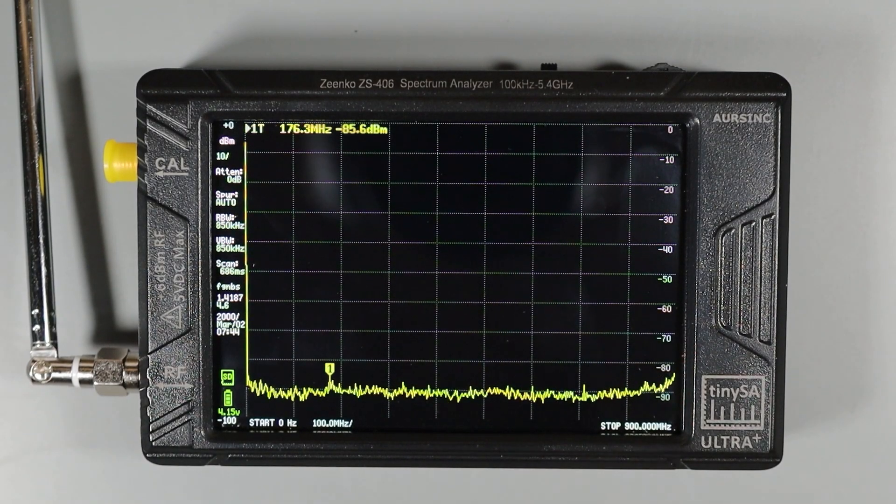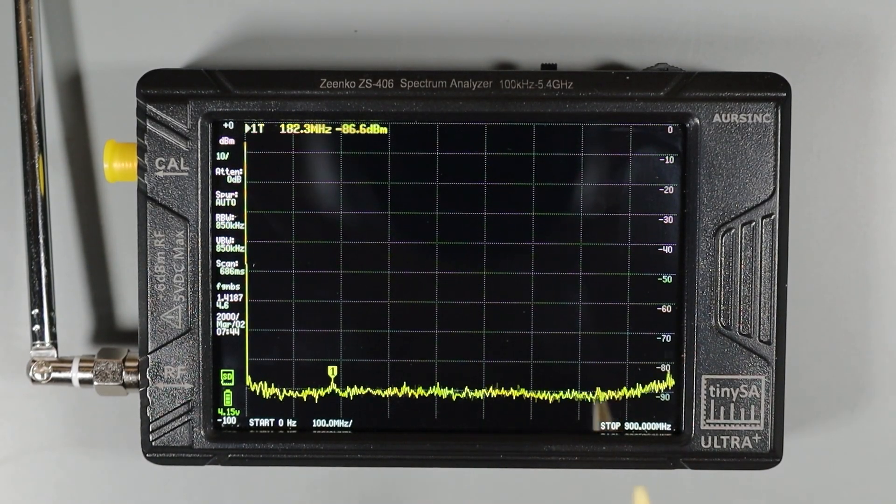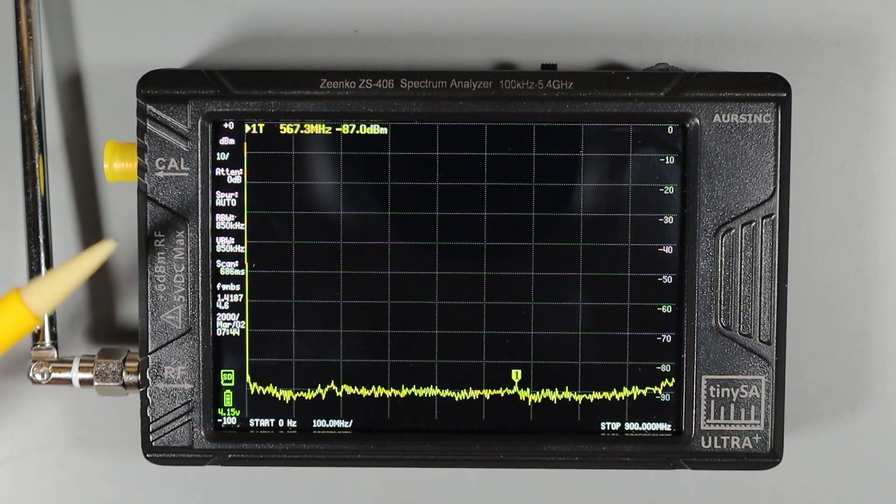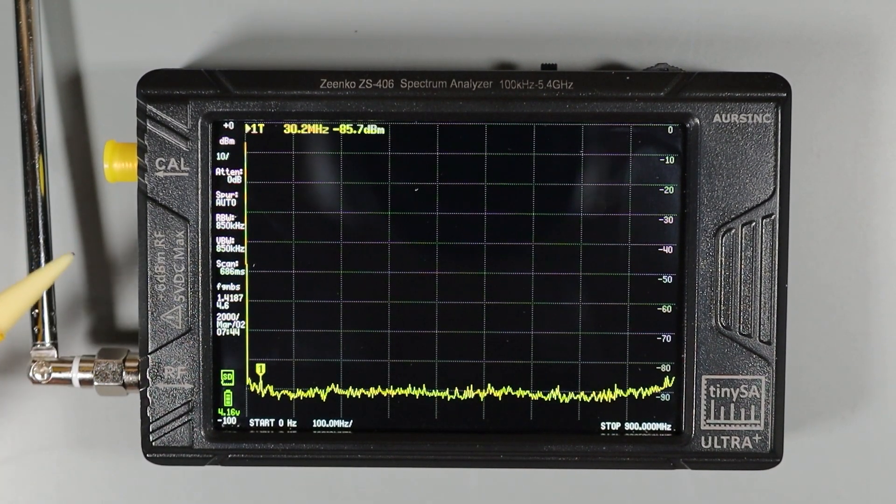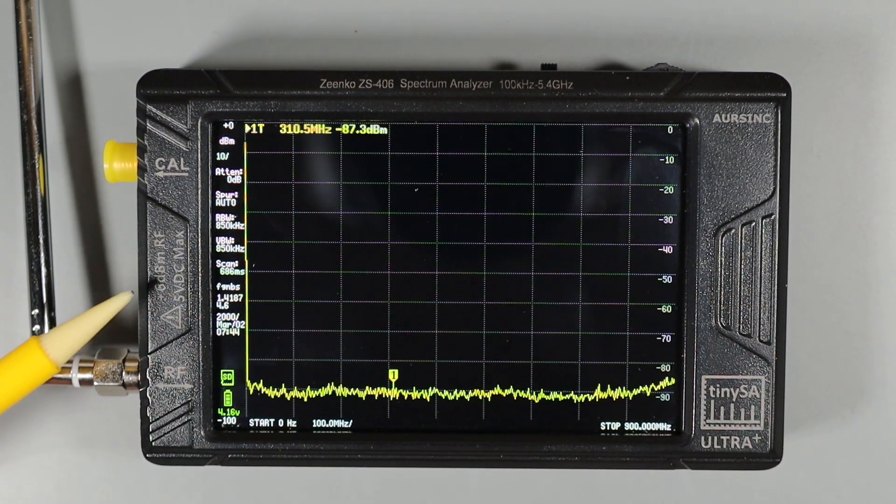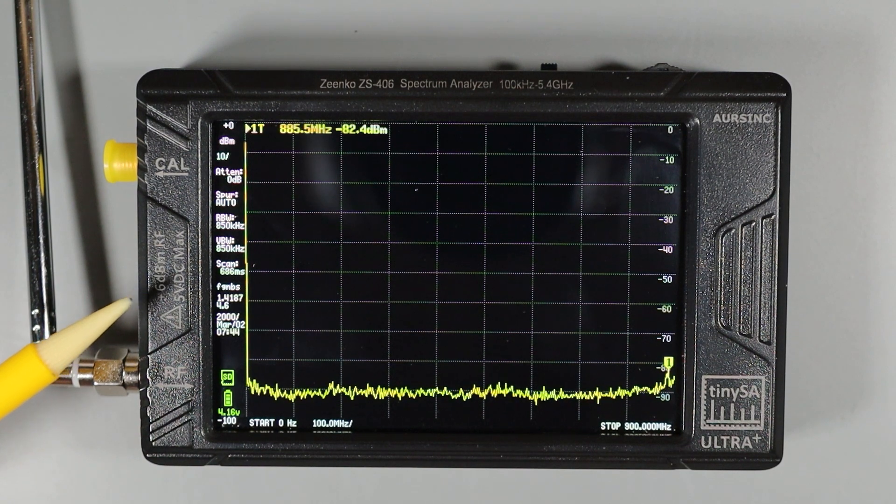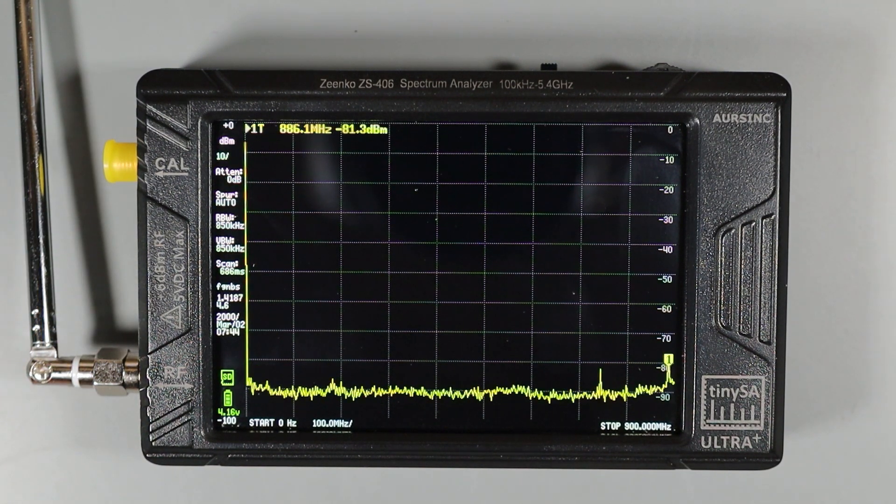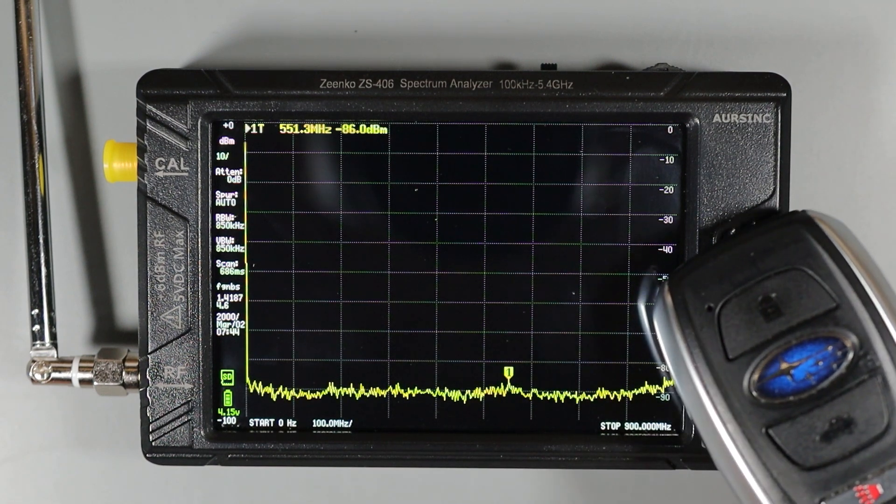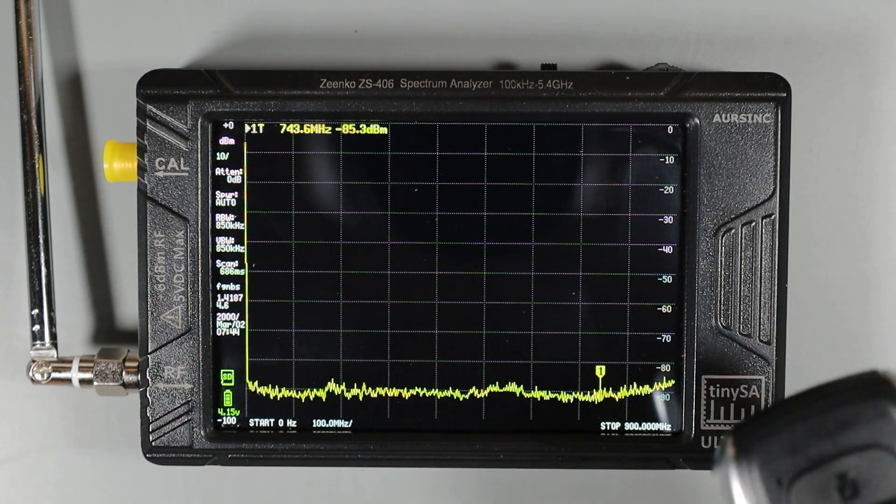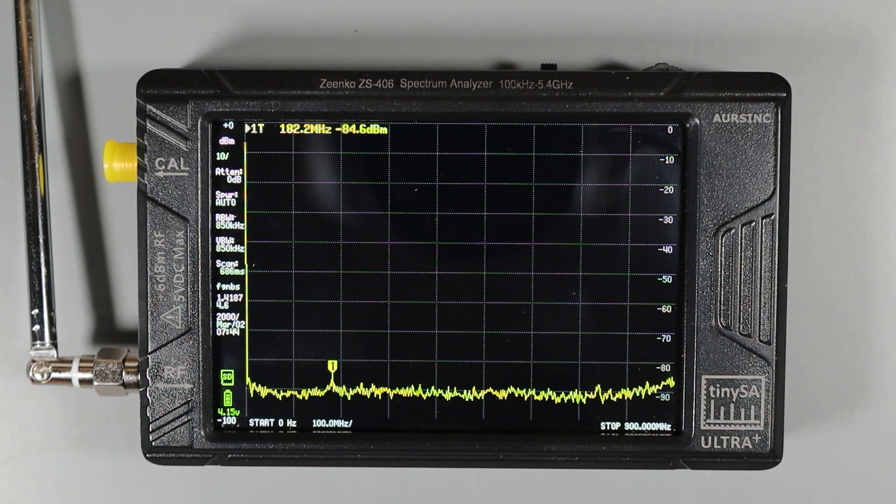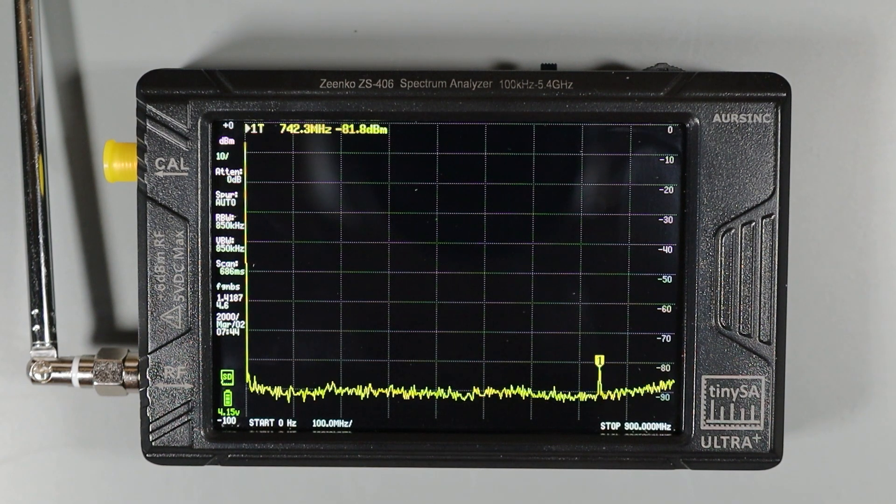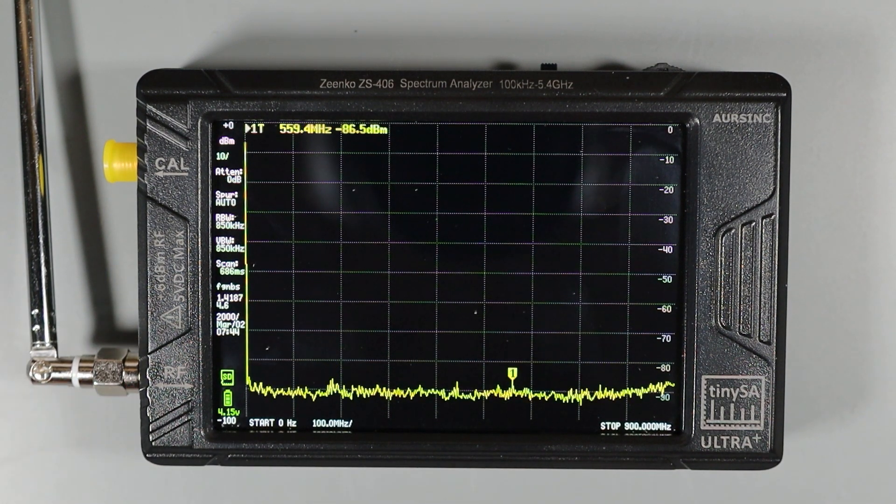So now let's look at a couple of real signals so you can see how the TinySA works. One thing to keep in mind about these devices is that they can be damaged by very strong signals. You can see right here, the maximum allowed signal is positive 6 dBm. So with that in mind, I'm going to use my Subaru key fob, which should generate a signal that is strong enough for us to look at, but not so strong that it'll damage the TinySA.